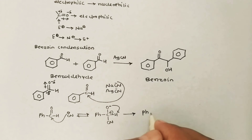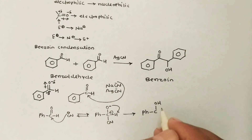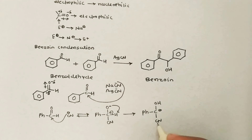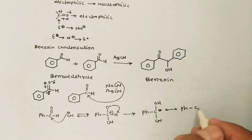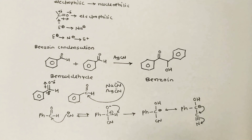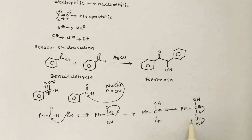After proton abstraction, the structure looks like Ph–C(OH)(CN)⁻. Now, why does this intramolecular proton abstraction take place? Because this negative charge is delocalized over this carbon atom. We can draw the resonating structure: Ph–C(OH)–C≡N, where the negative charge delocalizes over the nitrogen. Due to this delocalization, the intramolecular proton abstraction takes place, and a delocalized charge is always more stable than a localized charge.